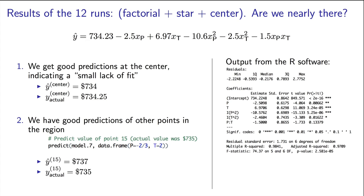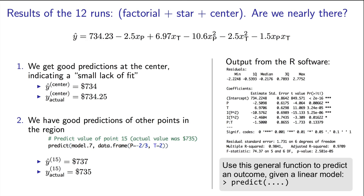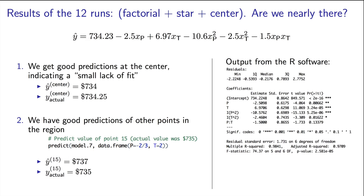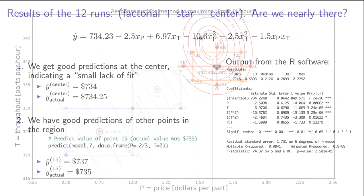Secondly, this quadratic model's prediction of the other points, for example one of the corner points, or one of the star points, or even experiment 15, is a very good prediction. There's little prediction error. So we have confidence in this model's prediction.